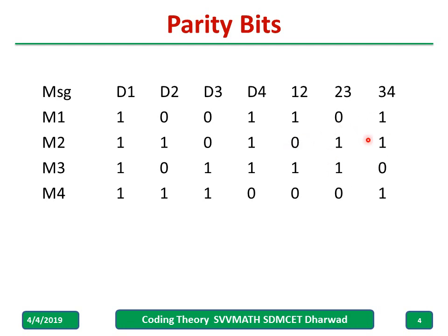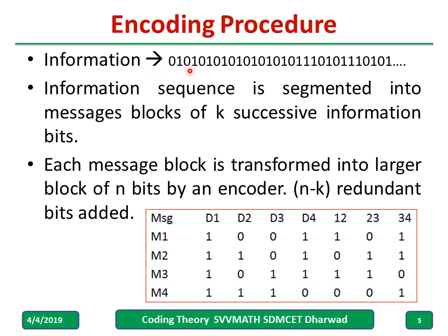These are the answers to make even parity. Now consider a general information sequence of zeros and ones. The encoding procedure is: the information sequence is segmented into message blocks of k bits. In the previous case I took four bits at a time. Each message block is transformed into a larger block of n bits by the encoder by adding additional bits. For example, four bits are data bits and three additional bits are appended as redundant or parity bits.